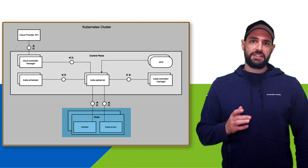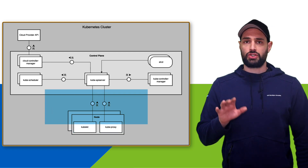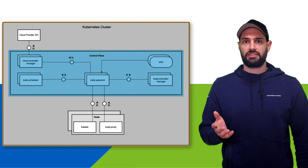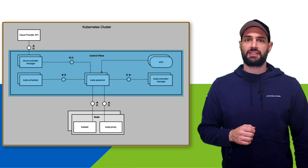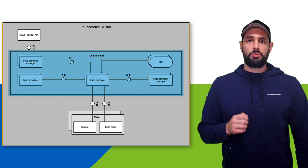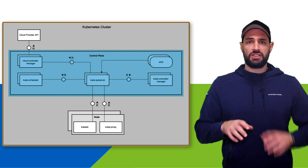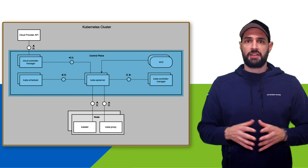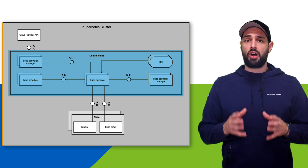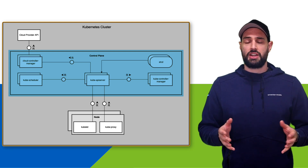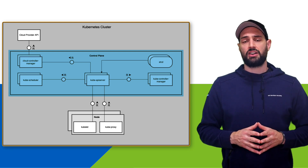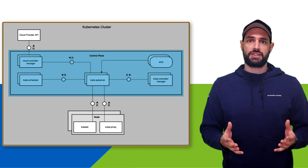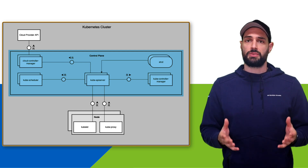All of these components are managed by the control plane, which is part of every productive and fully functioning Kubernetes cluster. The control plane and all its components — the container runtime, the single node agents and proxies — are part of the master node. The master node provides a running environment for the control plane to manage the state of your Kubernetes cluster.